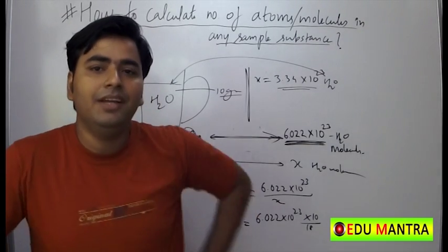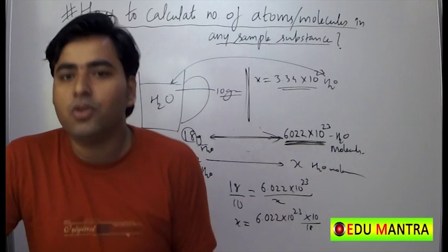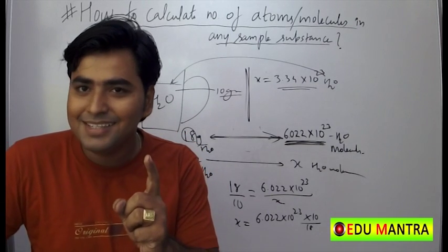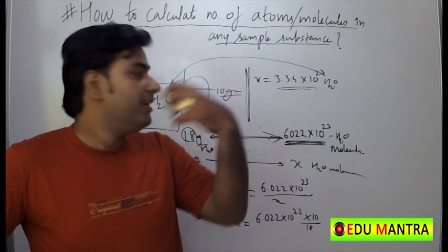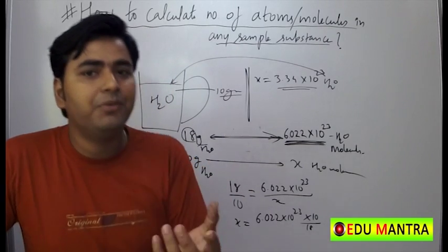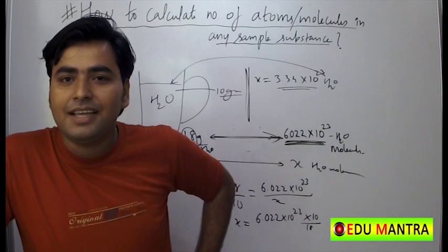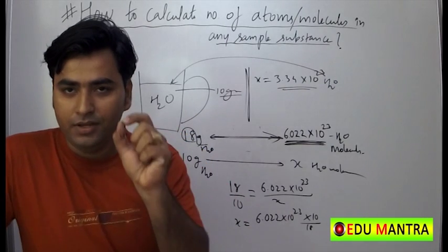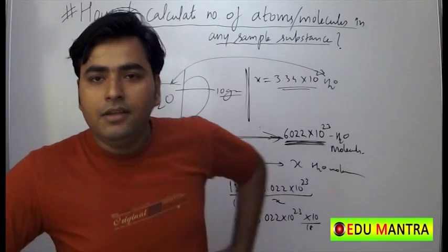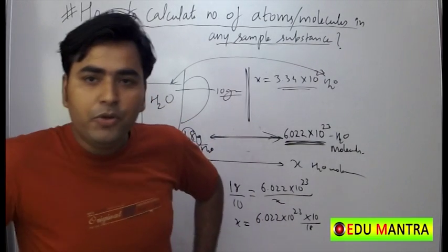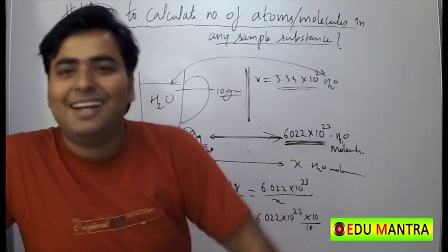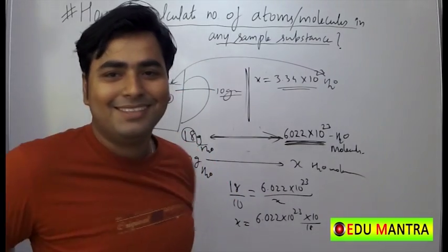Here we used a very important concept of chemistry — the mole concept. One mole contains 6.022 × 10²³ entities. Hope you enjoyed this video. If you liked it, go ahead and subscribe. Thank you!